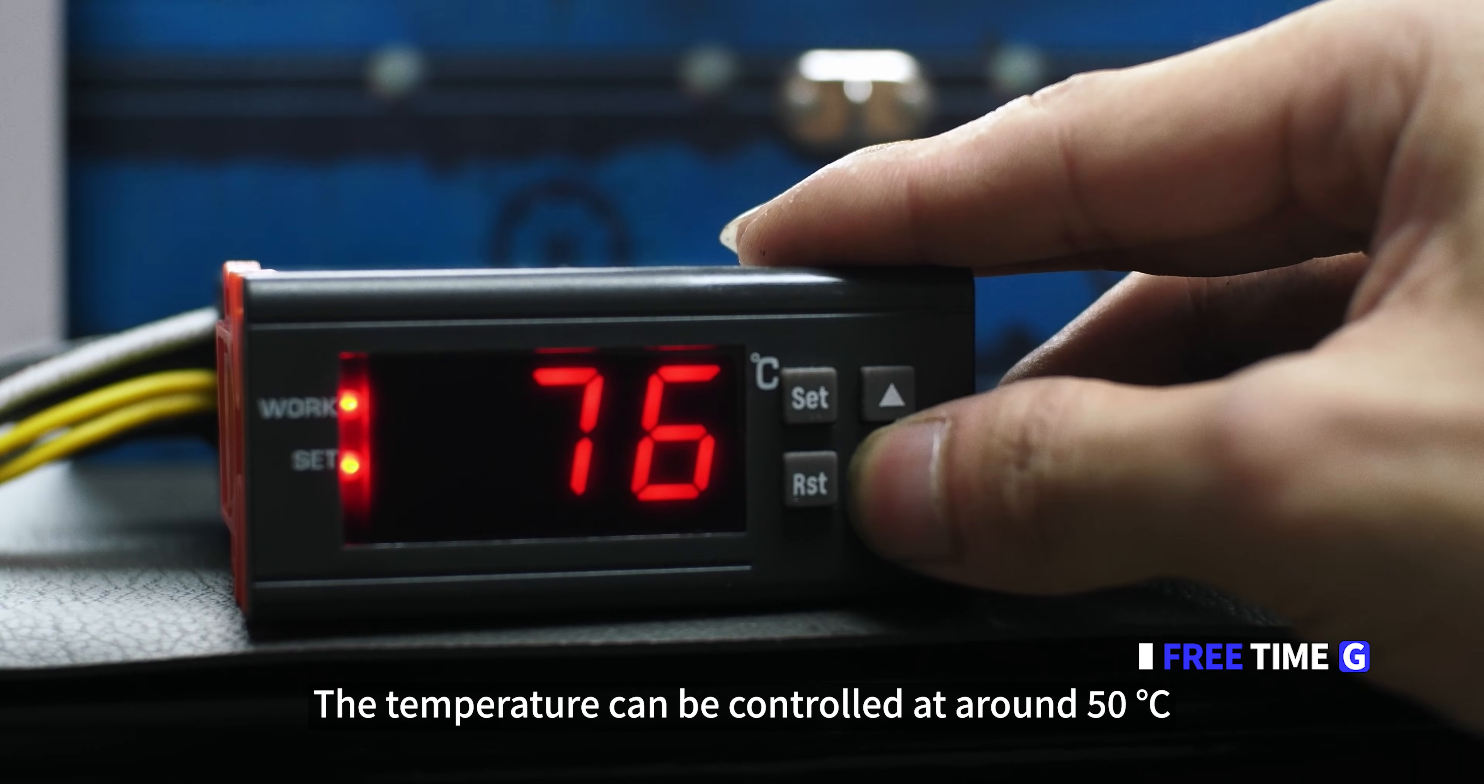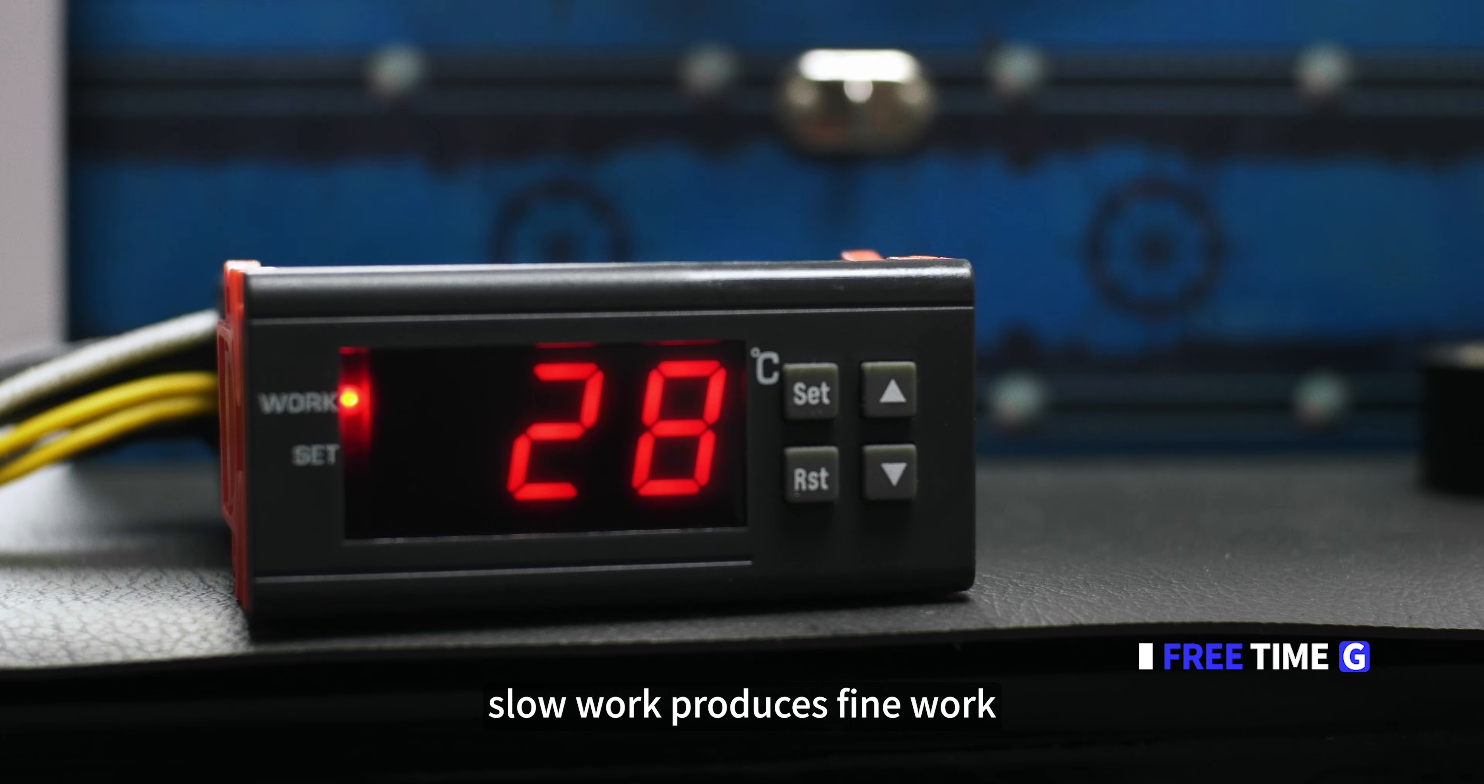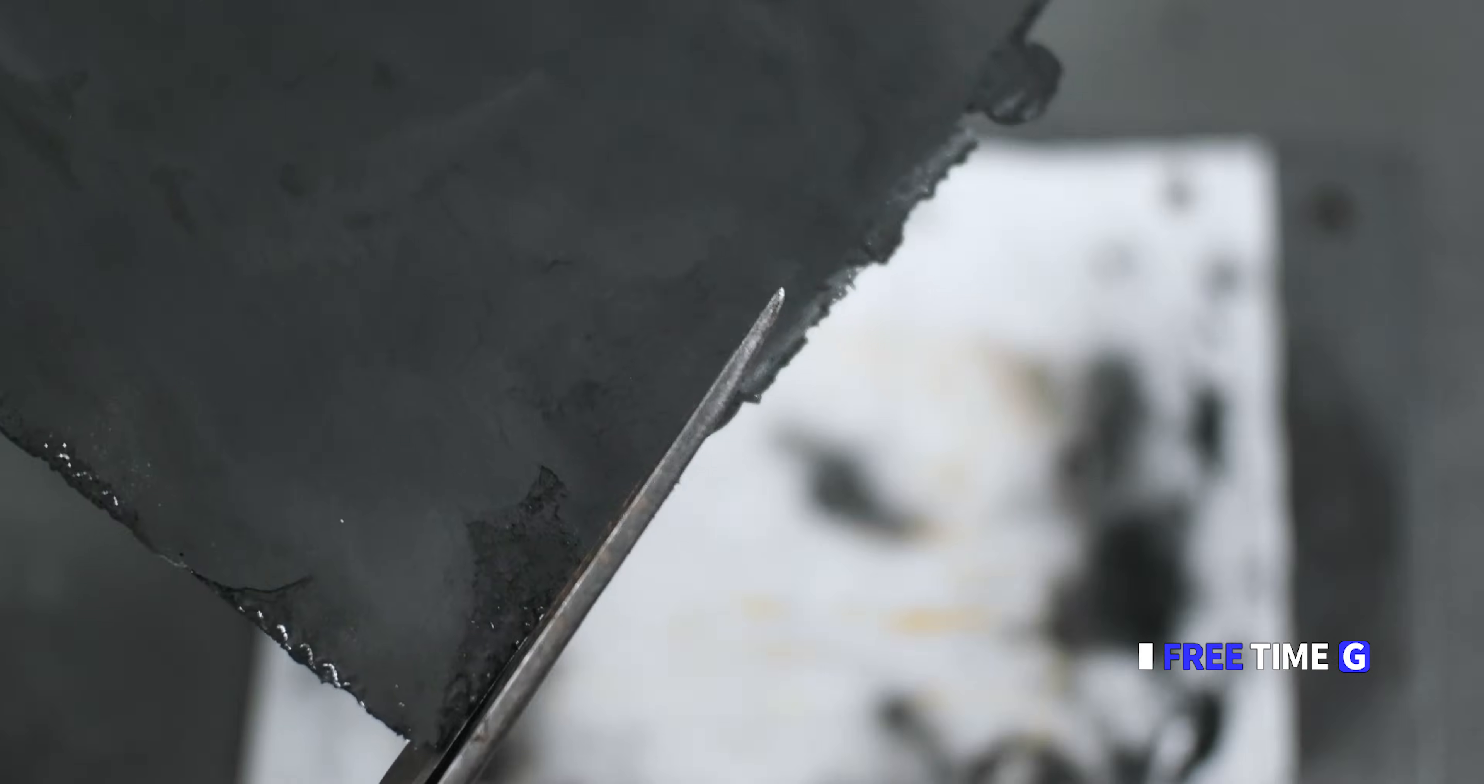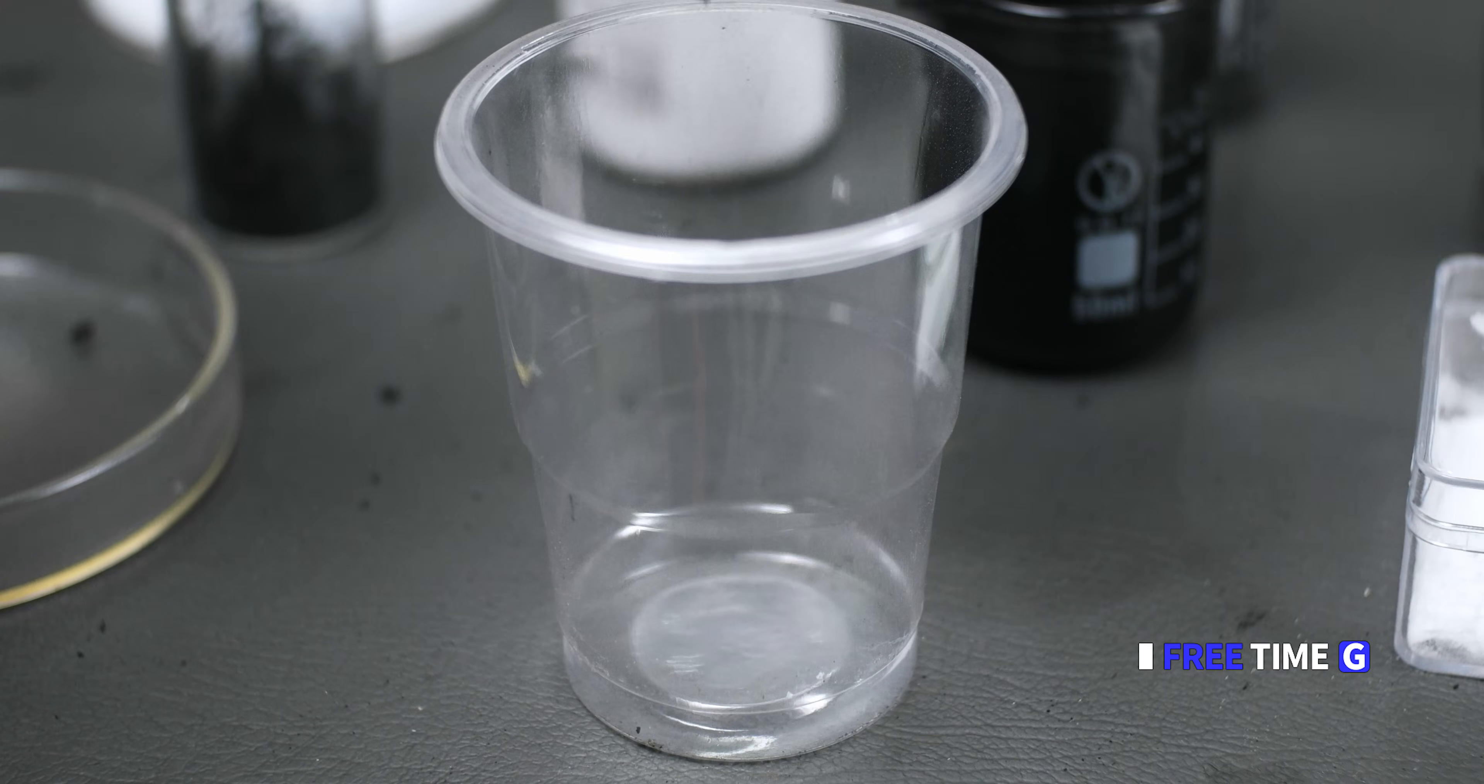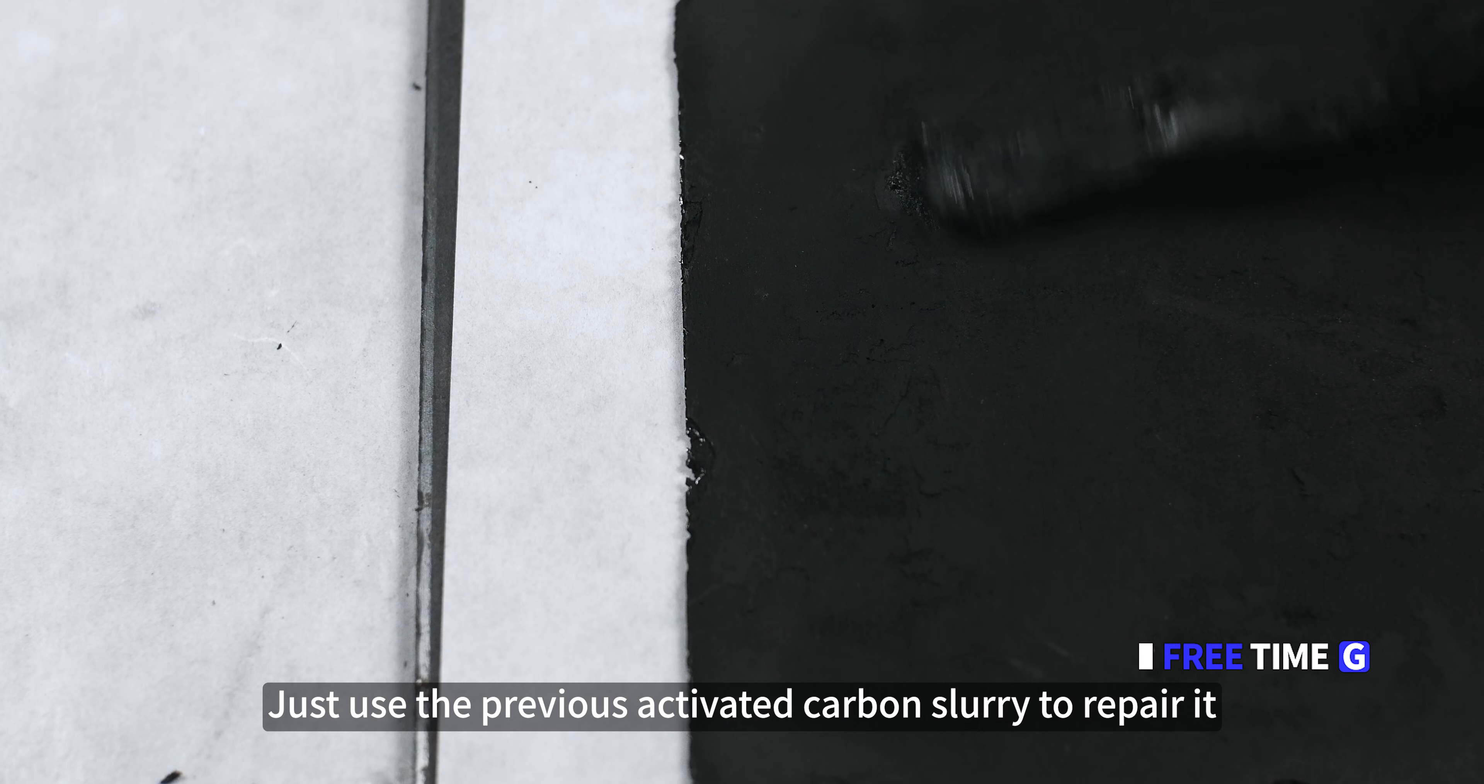The temperature can be controlled at around 50 degrees. The higher the temperature, the faster the curing. It is also inevitable these organic solutions boil and expand violently, the resulting micropores. Seek stability rather than speed. Slow work produces fine work. Two hours of heating is enough. Scraps can be collected and saved. Next time, you only need to add organic solution to dilute it. Check the electrode for obvious micropores. If you have, just use the previous activated carbon slurry to repair it.